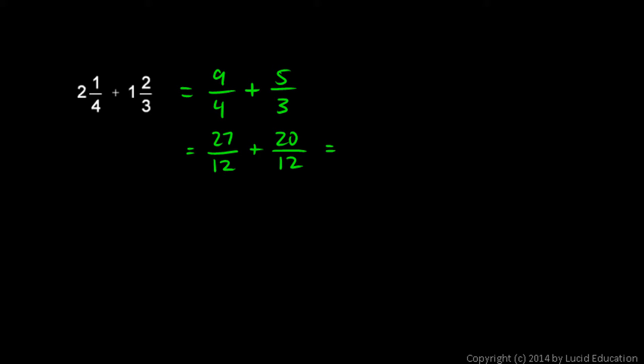So I have 27/12 plus 20/12. Those can now be added because they're both like fractions. 27 plus 20 is 47, so I have 47/12, and that is the same thing as 3 and 11/12.